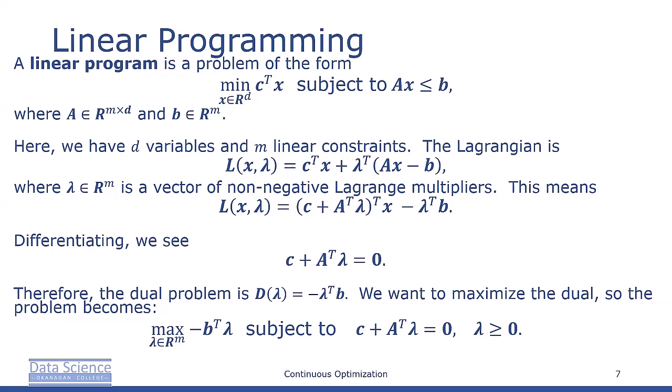Therefore, we can easily find the dual Lagrangian. In this case, it's D(λ) = -λ^T b. We want to maximize the dual, so the problem becomes maximize -b^T λ subject to c + A^T λ = 0 and λ ≥ 0.